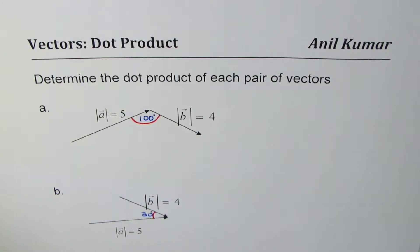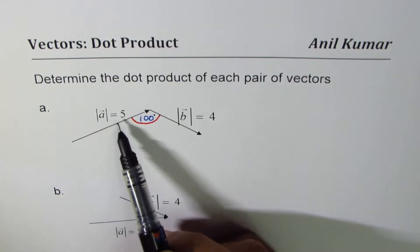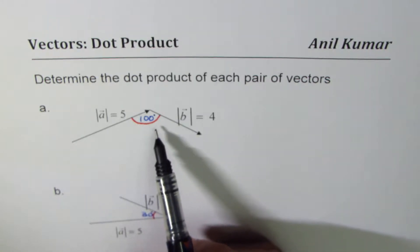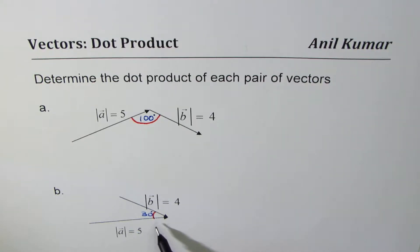I'm Anil Kumar. In this series of videos we'll discuss dot product. We'll begin with very simple examples. The question here is: determine the dot product of each pair of vectors. We are given two vectors — vector A with magnitude 5 and vector B with magnitude 4 — and the angle is as shown in the figure. For part B, the vectors have the same magnitudes but a different angle between them.